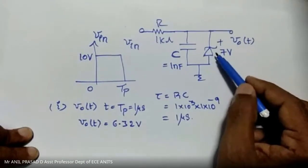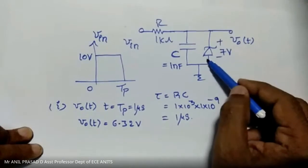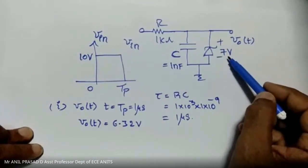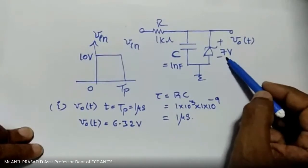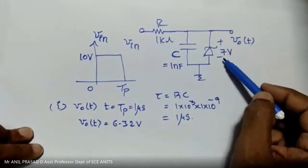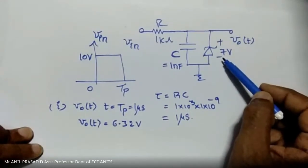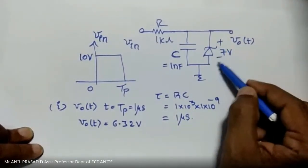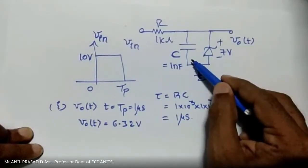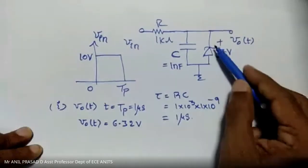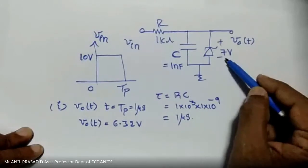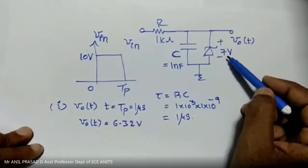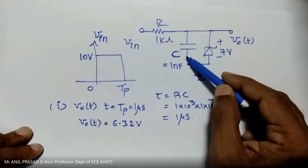When the Zener diode is in the breakdown region, the voltage across it is 7 volts. Since the voltage across two parallel elements must be the same, the voltage across the capacitor is also 7 volts. As long as the capacitor voltage is less than 7 volts, it is given by the capacitor alone. But once the capacitor voltage exceeds 7 volts, the Zener diode comes into the picture and automatically clamps the capacitor voltage to 7 volts.